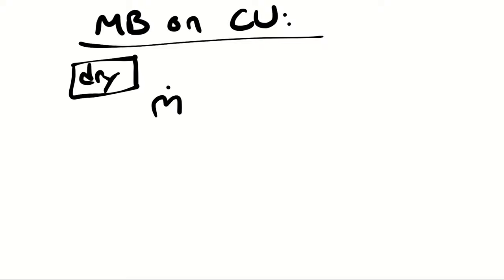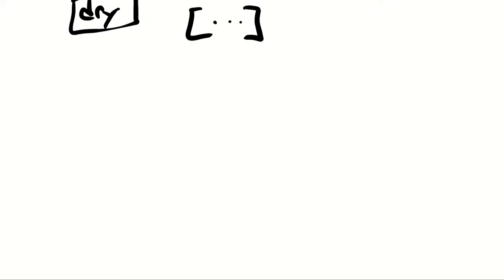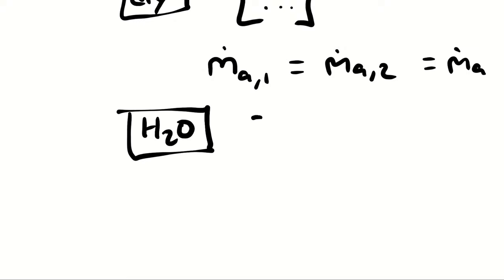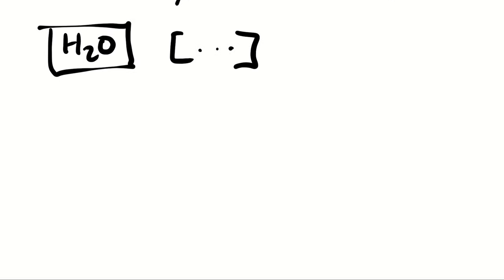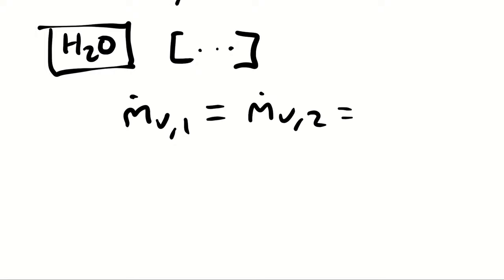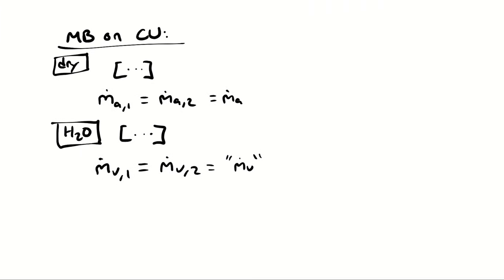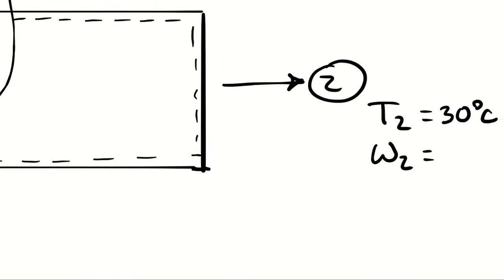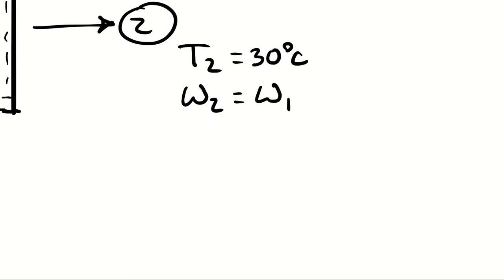If I set up a mass balance on the dry air, I recognize steady state operation of an open system with one inlet and one outlet. Therefore, m-dot-a1 equals m-dot-a2, which I'll just call m-dot-a. If I set up a mass balance on the water, the entering water has to leave again — the only entry is water vapor at state 1, the only exit is water vapor at state 2. So the mass flow rate of dry air and water vapor don't change, meaning the humidity ratio doesn't change. The other psychrometric property is that omega-2 equals omega-1.